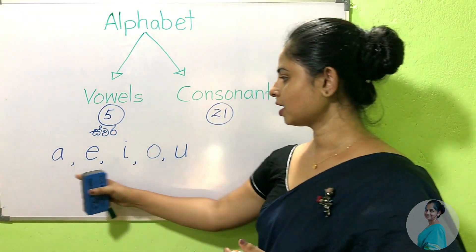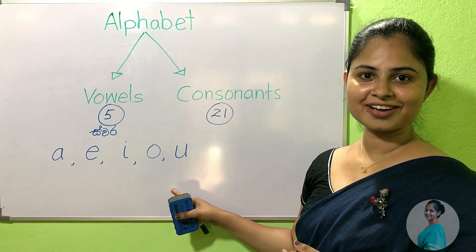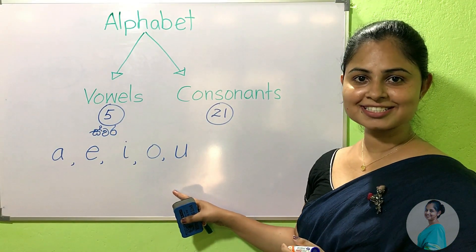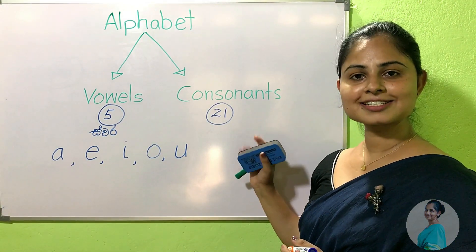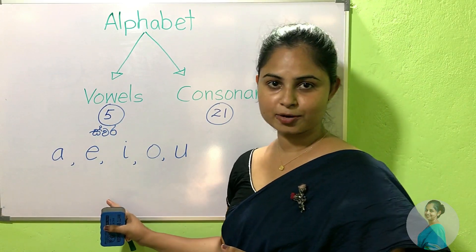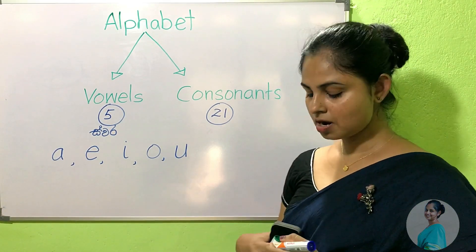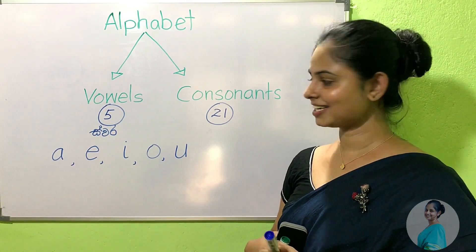So except these five vowel letters, the others are consonants.